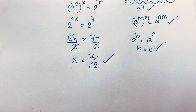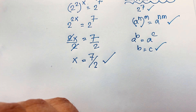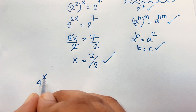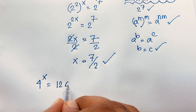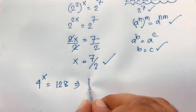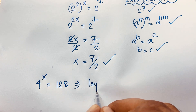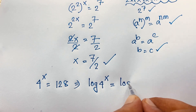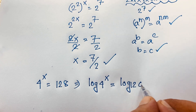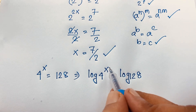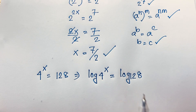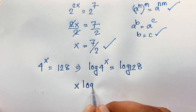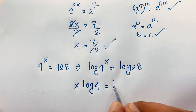Now I will solve this question using another method. Our question is 4 to the power x is equal to 128. I will use the natural log: take log of both sides, so log(4^x) is equal to log(128).